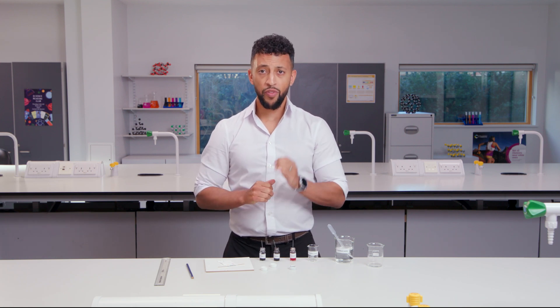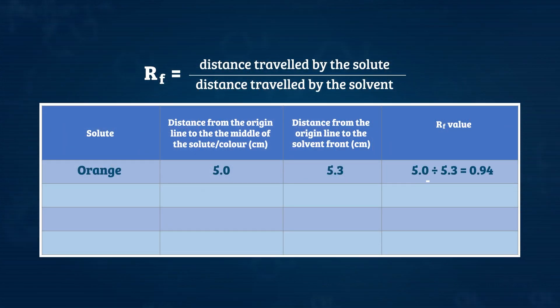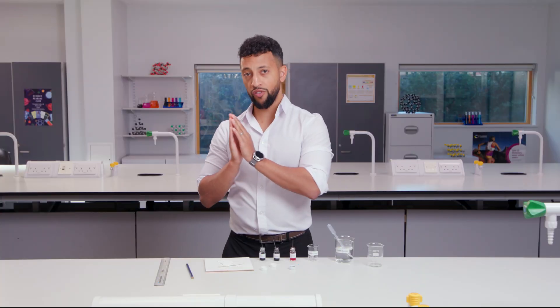For the orange colour in the water, the RF value is 5.0 divided by 5.3, which equals 0.94 to two decimal places. Now I'll repeat this for the other colours.